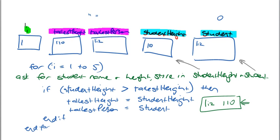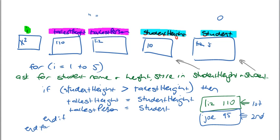So now I'm the second time through the loop, so I will be equal to two. My next person is Joe and he is 95 — this is the second person. Coming through here, I've asked for Joe's name and height, and I'm going to store it in those two values. So the name here is Joe — Liz is gone — and he is 95. Now, is the student height greater than the tallest height? Is 95 greater than 110? No, it's not. So I jump straight through — that condition is not true — and I drop back out to the loop.